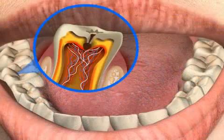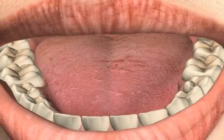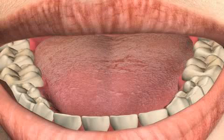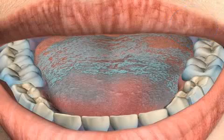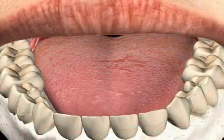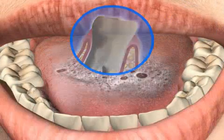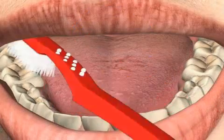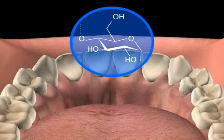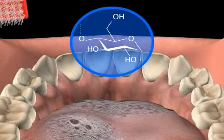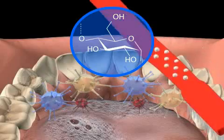The most important factors are certain host factors, plaque, and time. Host factors encompass all the factors relating to the host, such as tooth anatomy, saliva composition, and cleaning habits. Plaque is a layer on the teeth consisting of saliva parts, bacteria, and carbohydrates, and it forms when the teeth are not cleaned properly.